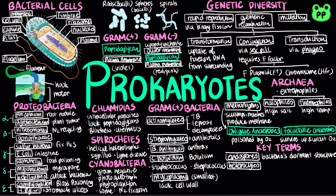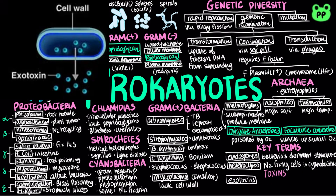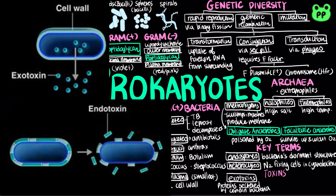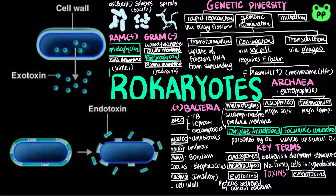Heterocytes refer to the nitrogen-fixing cells in cyanobacteria. Lastly, pathogenic prokaryotes cause disease by releasing two types of toxins. Exotoxins are proteins secreted by certain bacteria; they can cause disease even when the prokaryotes that produce them are absent. Endotoxins are the lipopolysaccharide component of the outer membrane of gram-negative bacteria, and are released only when bacteria die and their cell walls break down.